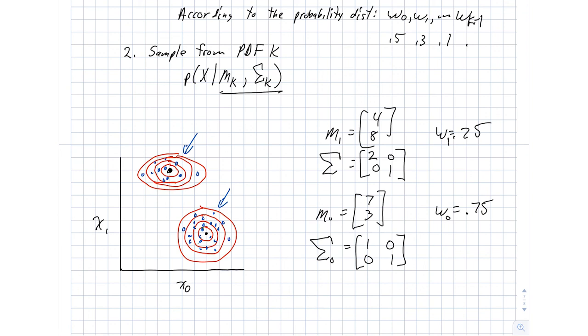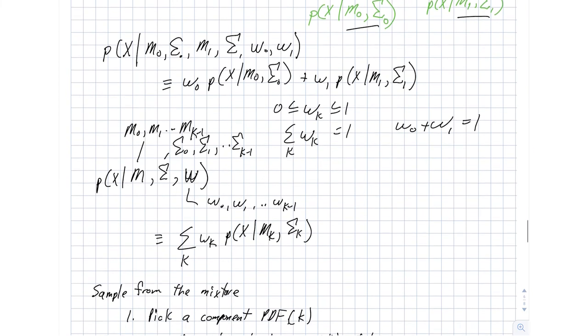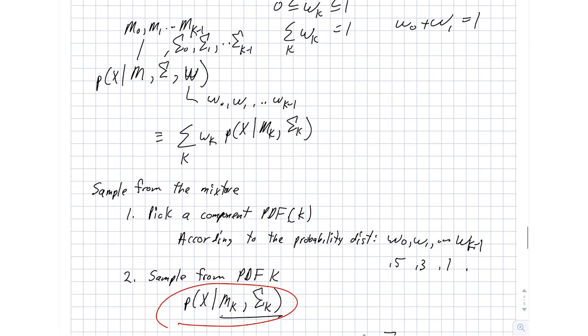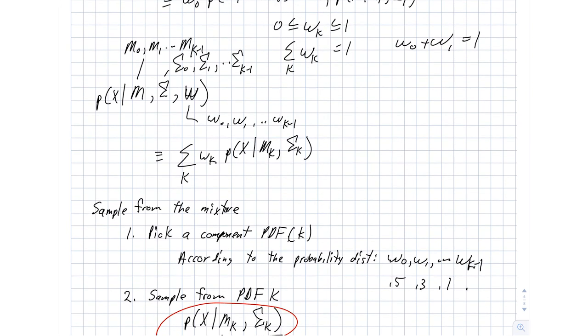That should give you a sense of how mixture distributions are constructed and how we can sample from them. The next challenge that we want to take on is this question. We know how to given a set of samples estimate these parameters, the MK and the sigma K. And now we're in a situation where we not only have these, but we have them for big K different Gaussians. And then we also have this set of weights. So our goal here is we want to pick Ms, sigmas, and weights given some sort of a training set. So let's look at that mathematics next.